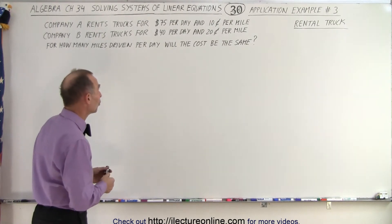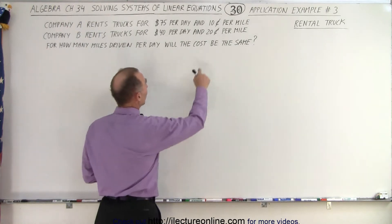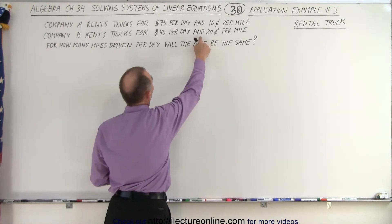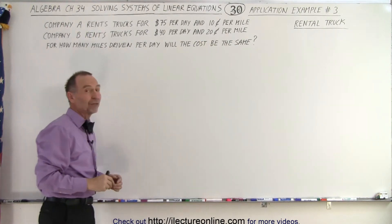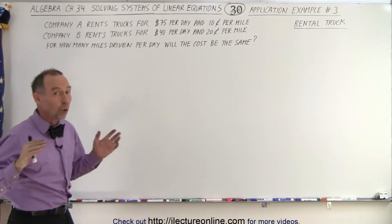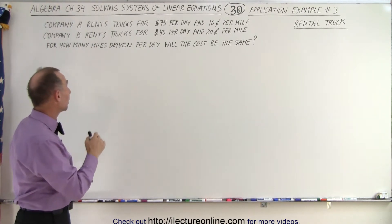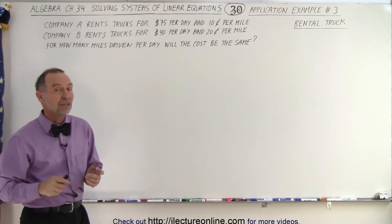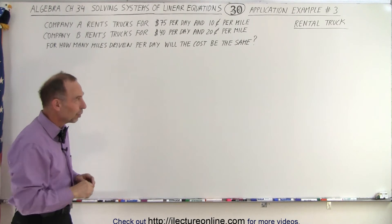Notice, if you're just going to drive the truck a few miles then Company B is the cheapest, but if you're going to drive it a whole lot of miles then Company A may be the cheapest. But where's that break-even point?